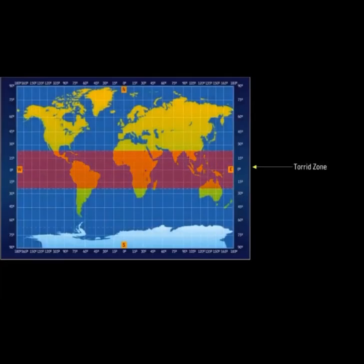The torrid zone is that part of the earth which lies on both sides of the equator between the tropics. It is also known as the tropical zone and is the hottest part of the earth. The sun's rays fall vertically on each place within this zone at least twice a year.